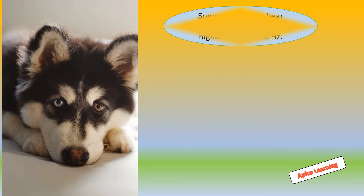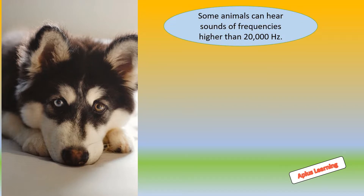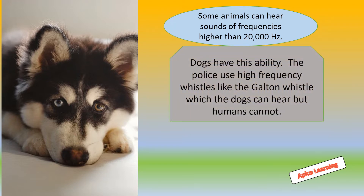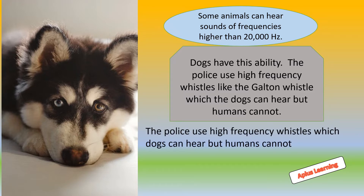You know, children, some animals can hear sounds of frequencies higher than 20,000 hertz. Dogs have this ability. The police use high-frequency whistles called the Galton whistle, which dogs can hear but human beings cannot.